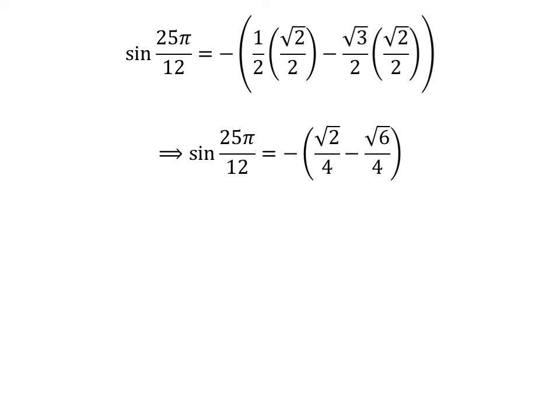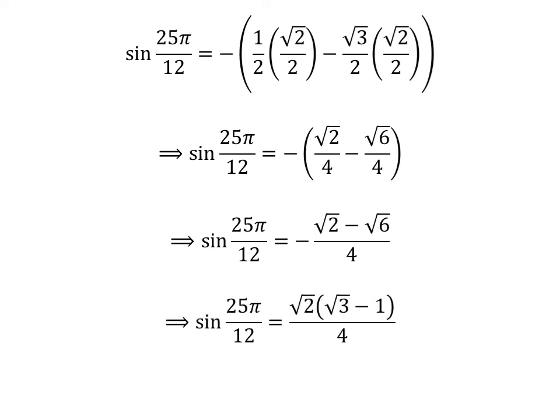Straight multiplication gives us sine of 25 times pi upon 12 is equal to minus of square root of 2 upon 4 minus square root of 6 upon 4. As the denominator of both fractions is the same, sine of 25 times pi upon 12 equals minus of square root of 2 minus square root of 6 upon 4. Taking out the common factor minus square root of 2 in the numerator gives us sine of 25 times pi upon 12 is equal to square root of 2 times square root of 3 minus 1 upon 4.